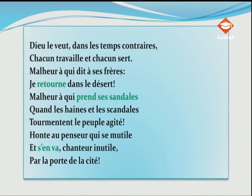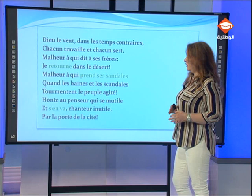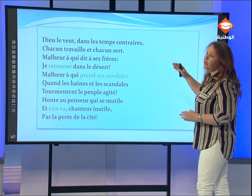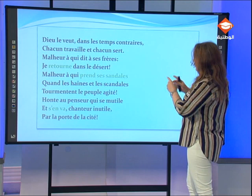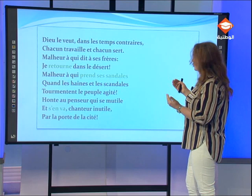Regardons de nouveau ces vers pour reconnaître les procédés d'écriture. Victor Hugo est en train de nous présenter l'attitude de certains écrivains. Le penseur dit à ses frères : « Je retourne dans le désert » ; il prend ses sandales et il s'en va par la porte de la cité. On remarque une certaine progression dans l'emploi de ces verbes : « retourner », « prendre » et « s'en aller ». Cette progression traduit l'attitude de cet écrivain.